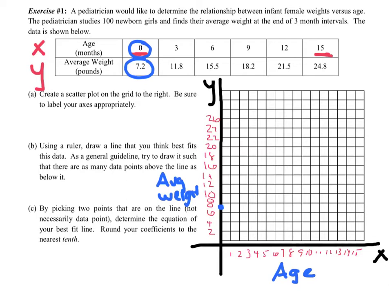3 and 11.8, so I'm going to be right about there. Let's see. 6 and 15.5. So, I would say right about there. 9 and 18.2, maybe right there. 12 and, let's see, 21.5, we'll say there. And 15, 24.8, right there. Now, notice, you're not connecting. A scatterplot is just points scattered, and you're done.